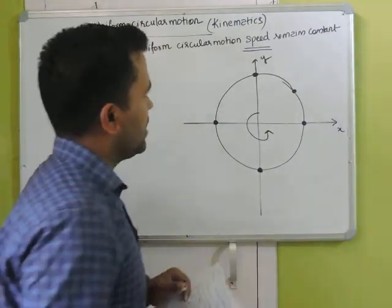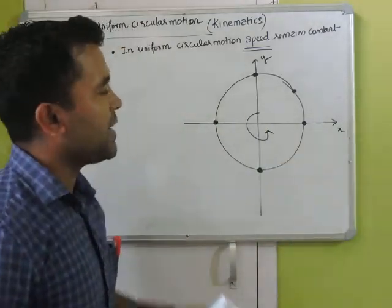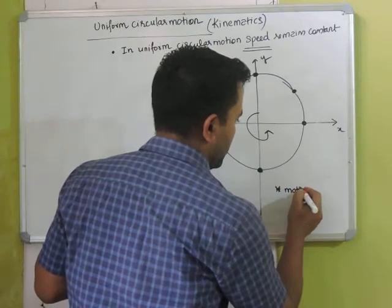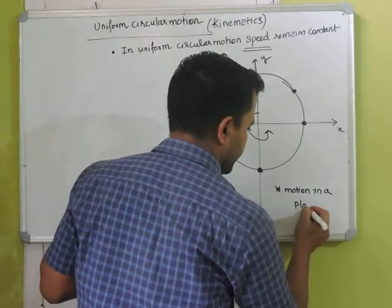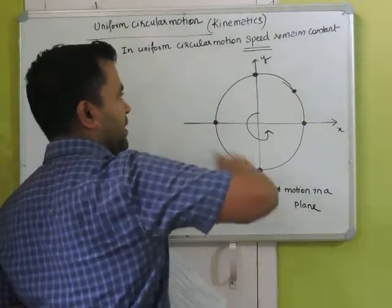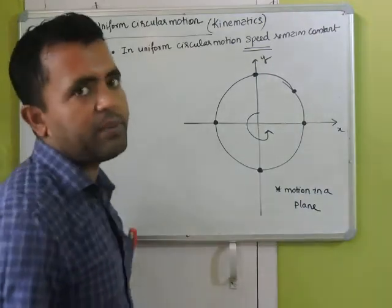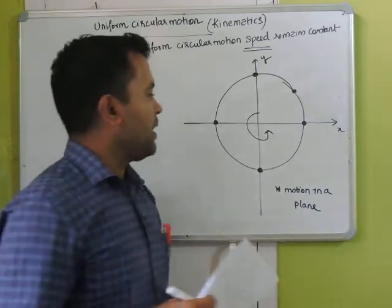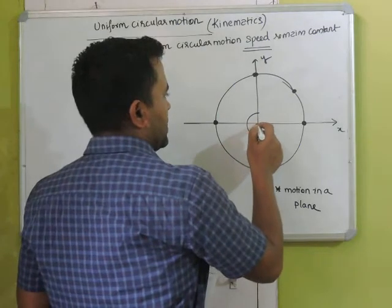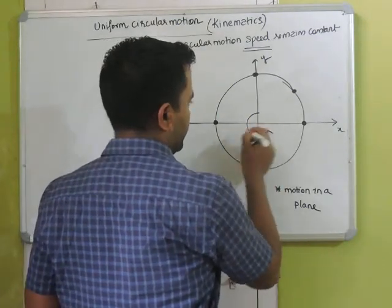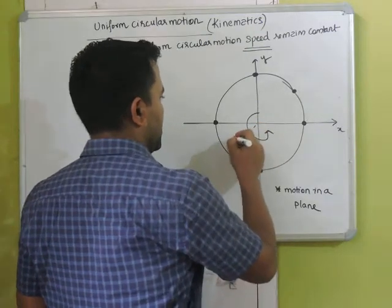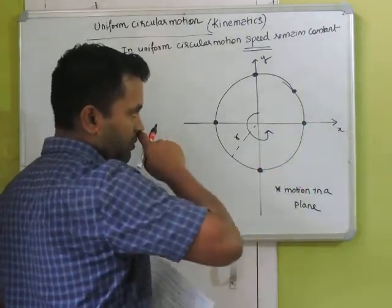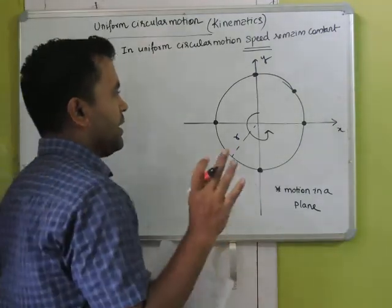Uniform circular motion is an example of motion in a plane, because it is happening in the XY plane — just like projectile motion. Let us say the radius of the circle is r. The particle is going in this circle and we want to find what is changing with time.